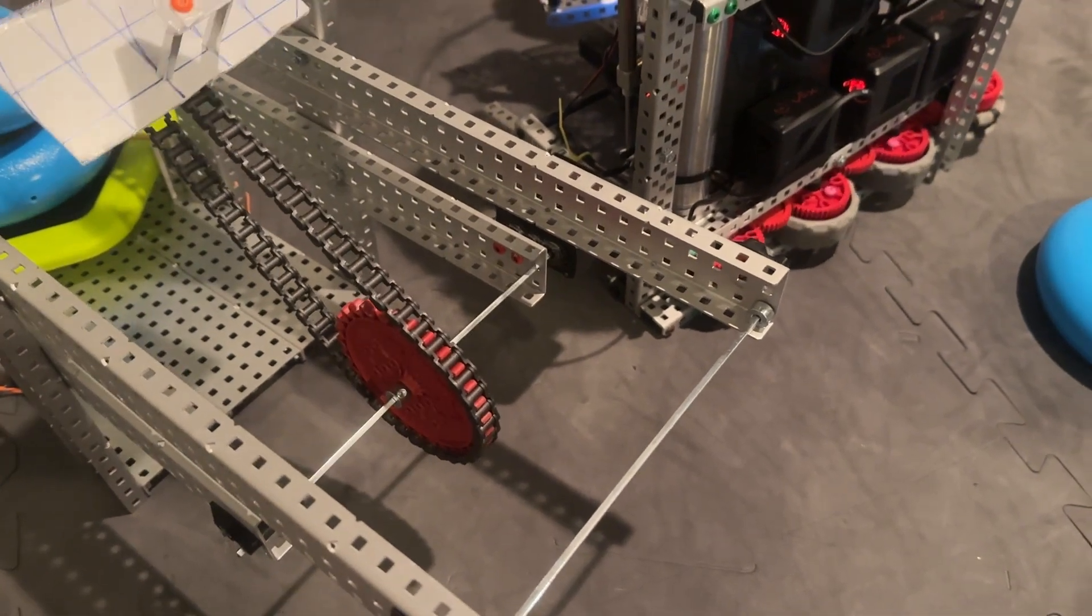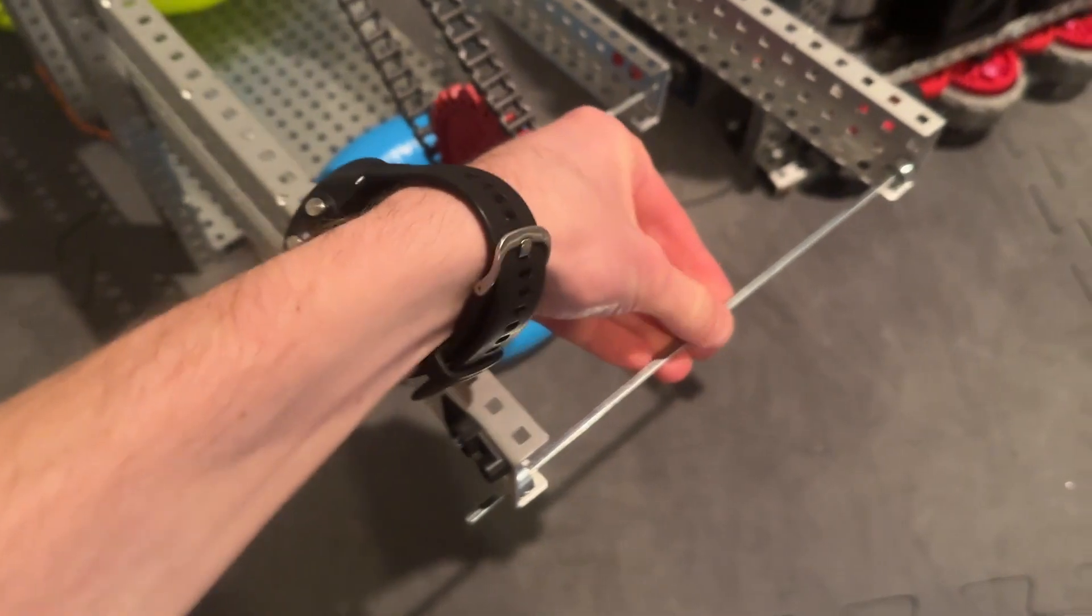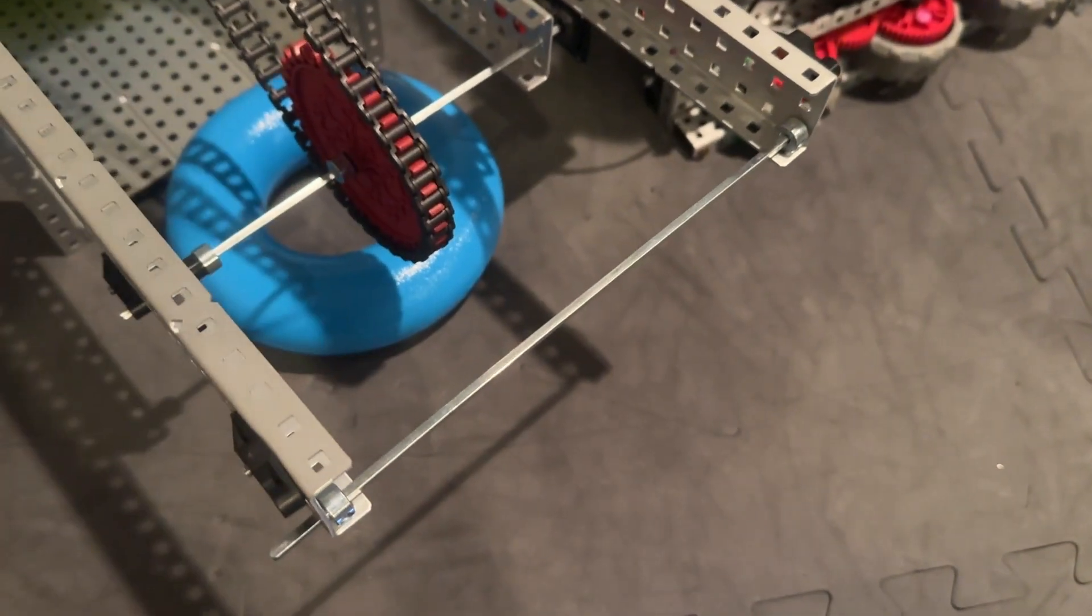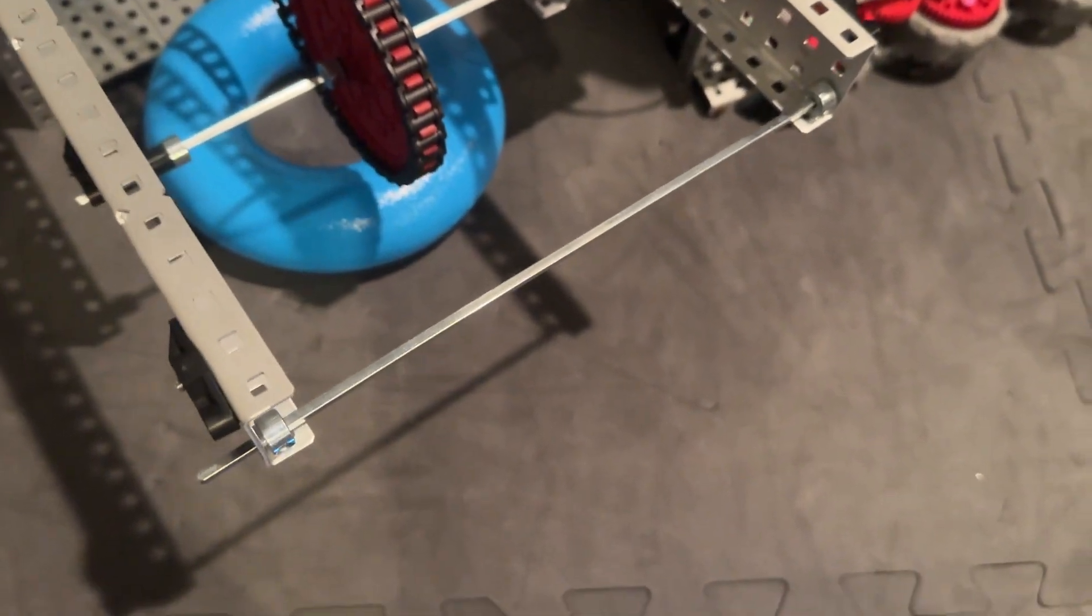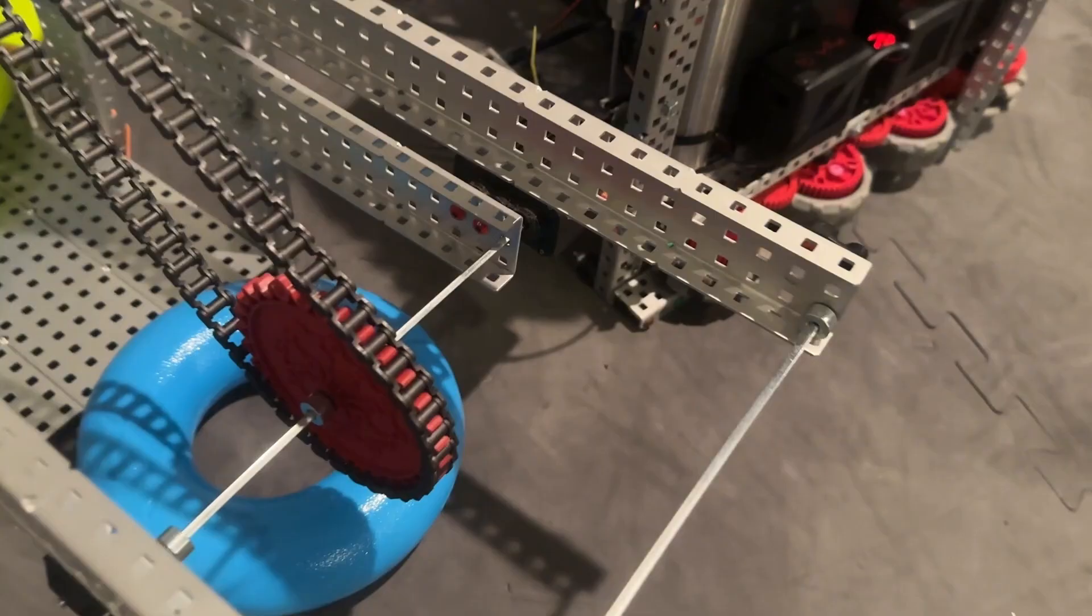And then the other thing that we have to counteract this—this is also very important—is what's called the bonk bar, which is really just anything. This is just like a shaft, a pole shaft. It essentially stops the ring from just flying off whenever you pick up the ring because it would otherwise.